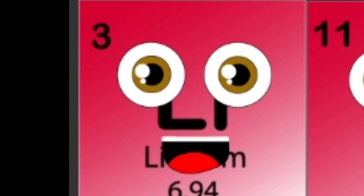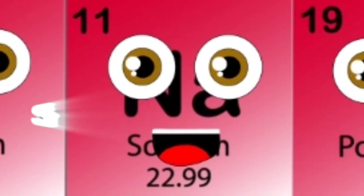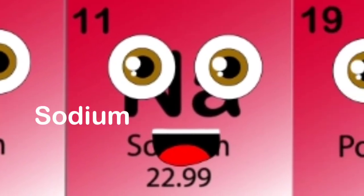My protons and electrons attract one another, that's why I have three electrons that orbit my nucleus center. The symbol on my element square is Li. I'm the third element and the lightest metal you will come by.